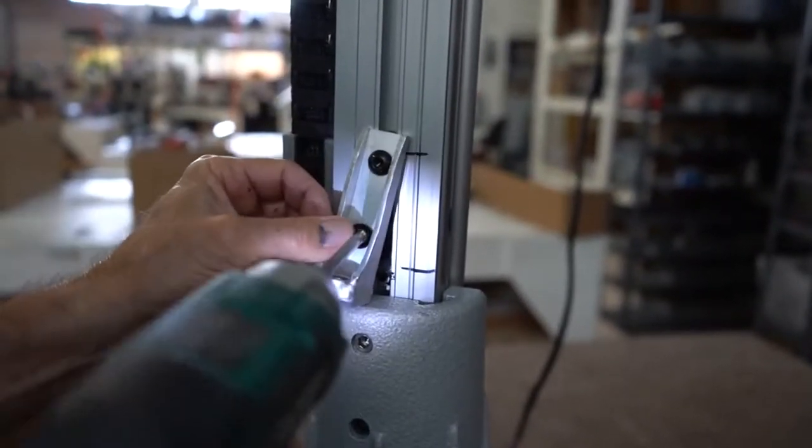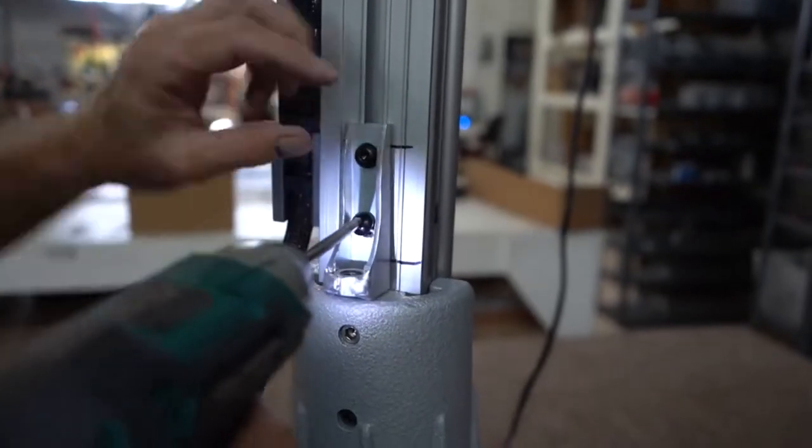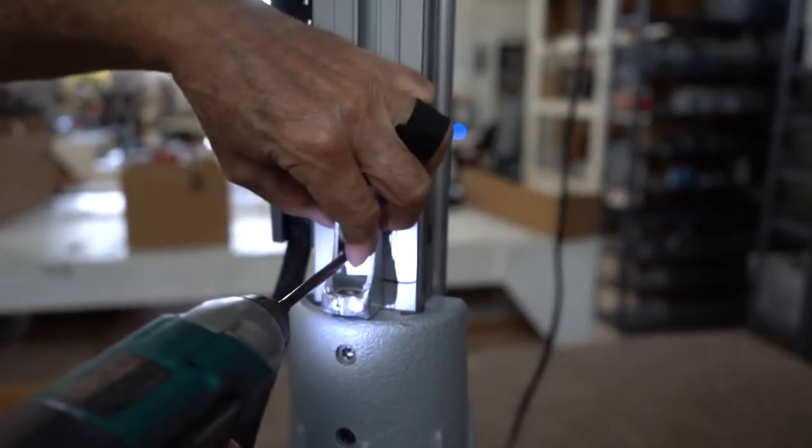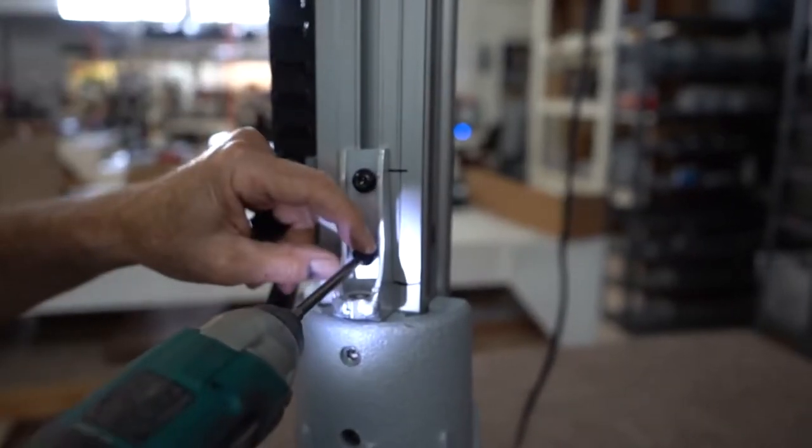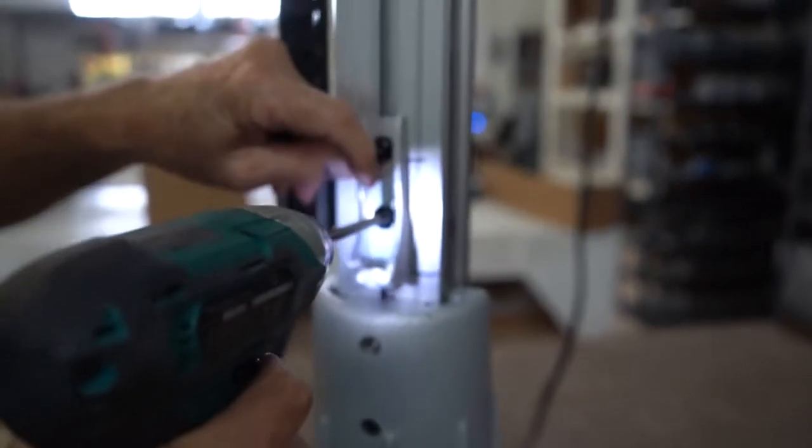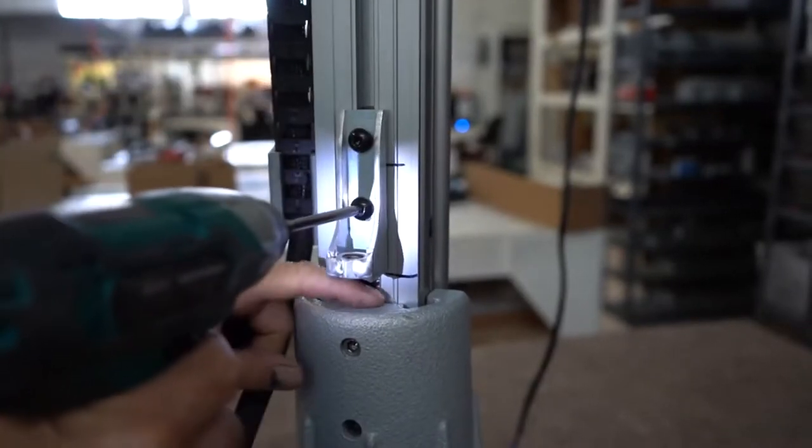Using the same screws, attach the Z-tightening tool to the back of the Z-rail. Make sure that it is about one inch above the base can. Make sure that these screws are tight.